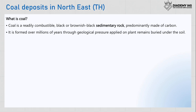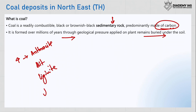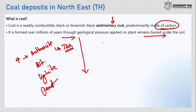Coal is a sedimentary rock predominantly made of carbon, formed over millions of years through geological processes applied on plant remains buried under the soil. There are four types of coal in decreasing order of quality: anthracite, bituminous, lignite, and peat. Anthracite coal is the highest quality, with about 80 to 95 percent carbon content. In India it is found in small quantities only in Jammu and Kashmir, so good quality coal is not available in India and we import it from countries like Australia.